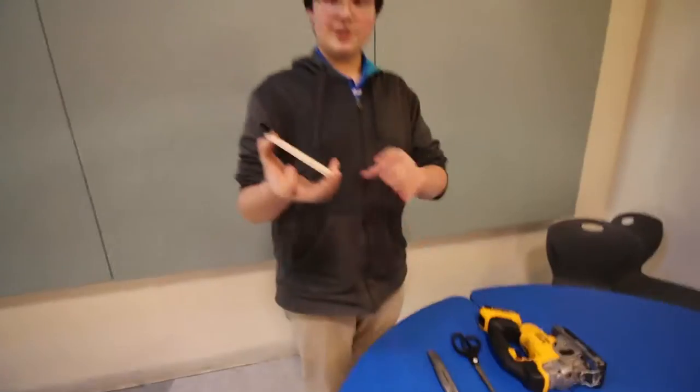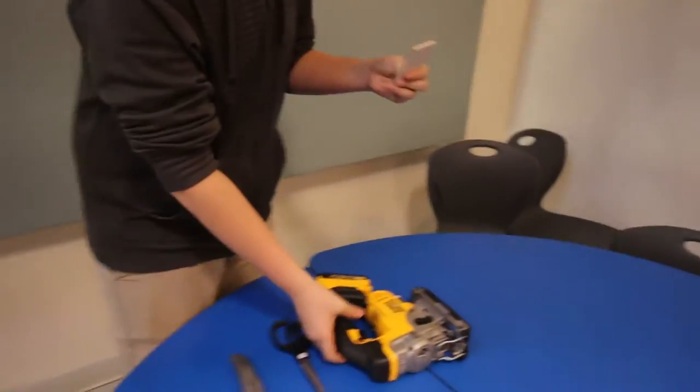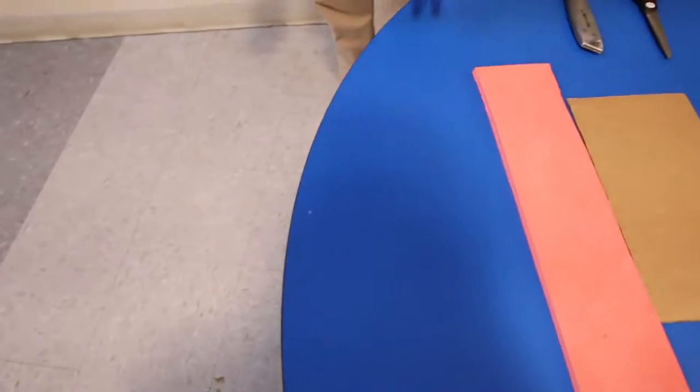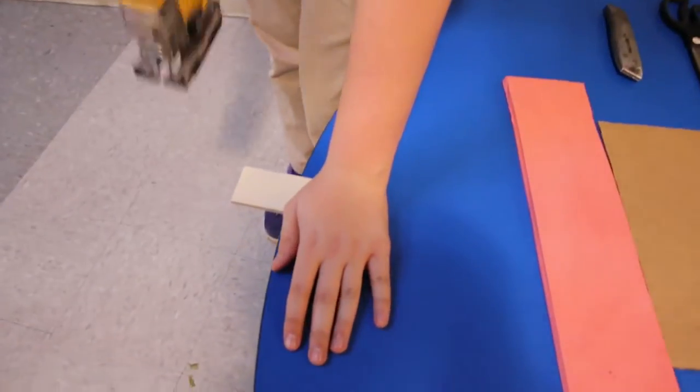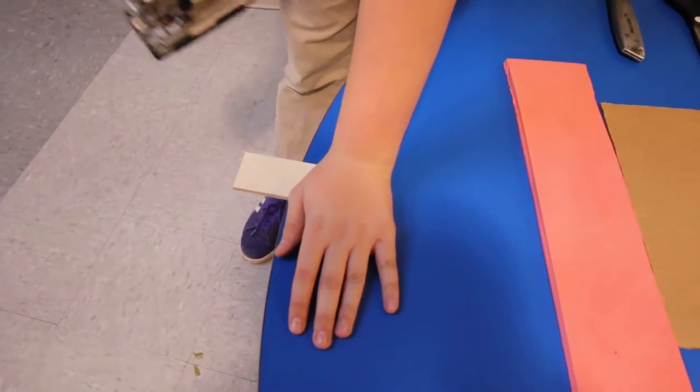For lack of a better example at the moment, we'll be using a jigsaw. Most of the times you will be using a jigsaw for wood when you're cutting out your prototypes. So what you want to do is either use a trash can or a table and make sure it's over the edge.